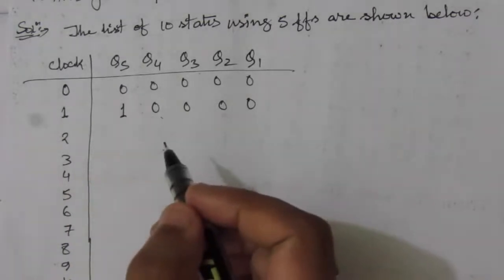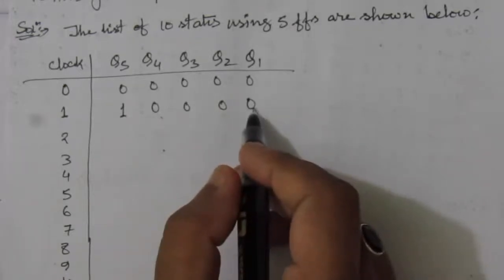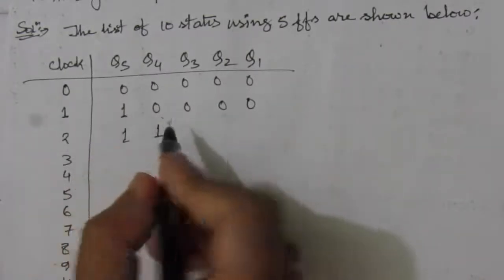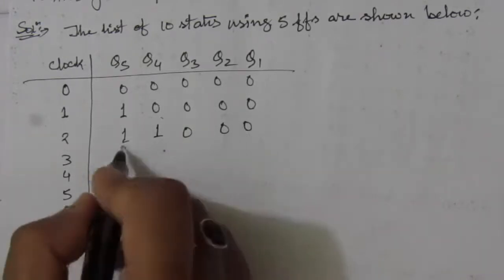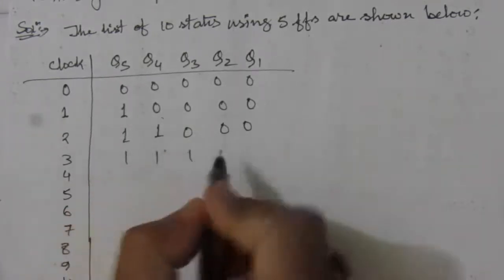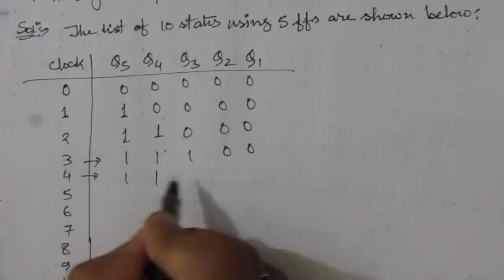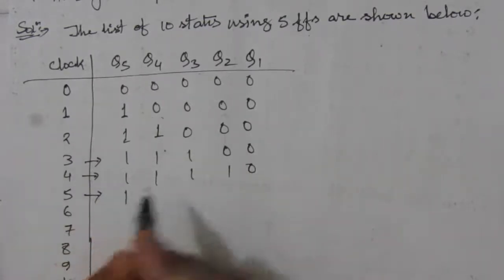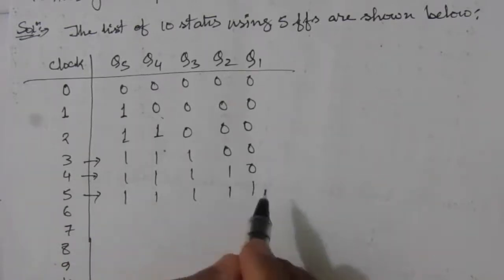With each positive clock edge the bits shift right. After the first clock: 10000. Next: 11000. Then: 11100. Then: 11110. And then: 11111.